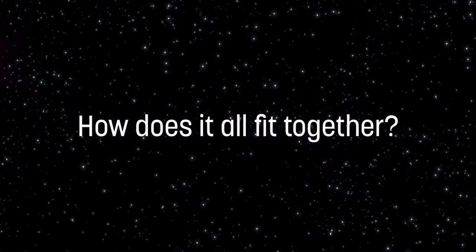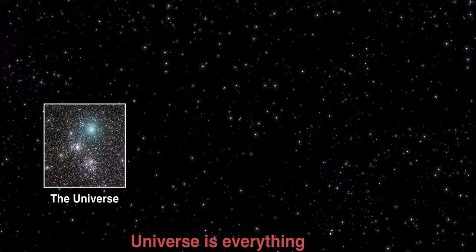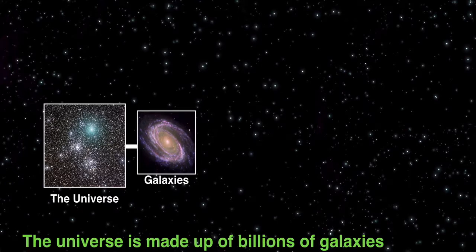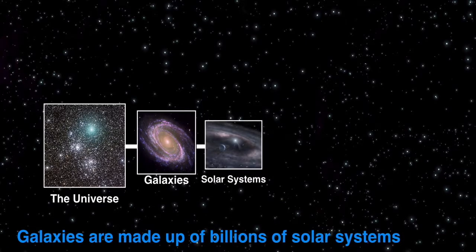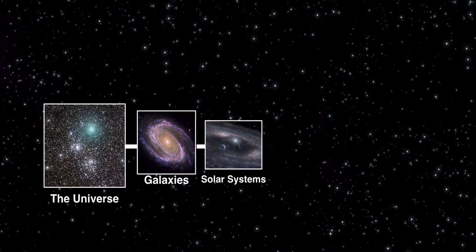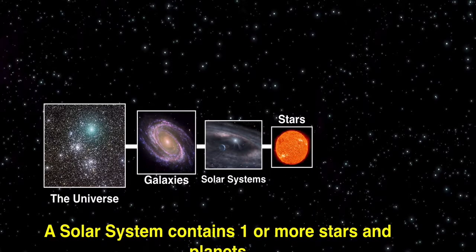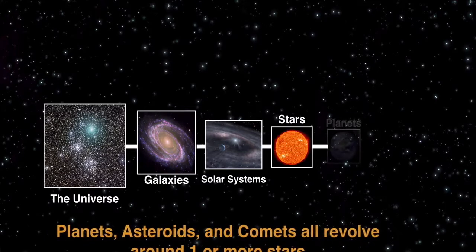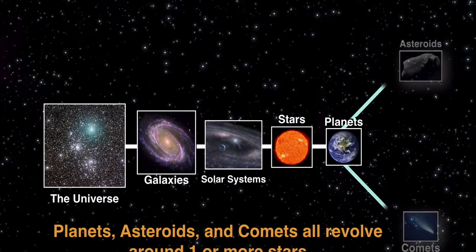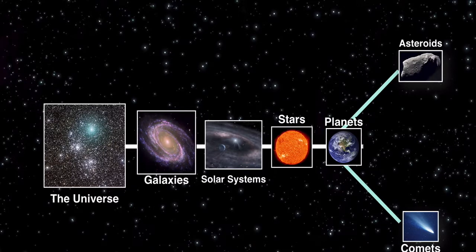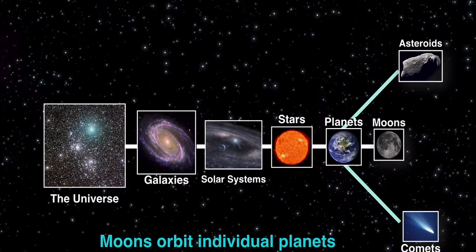How does all this fit together? How does our universe really wind up being laid out? We start with the universe — that's the biggest thing. The universe is made up of billions of galaxies, and in those galaxies we have probably billions of solar systems. Each solar system is composed of one or more stars. In those solar systems we also have planets, asteroids, and comets orbiting the star. And then finally, orbiting individual planets, we have moons. So that's the structure of our universe.